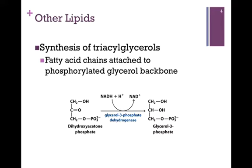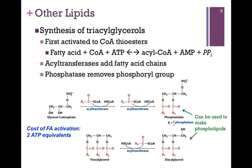Let's first consider the synthesis of triacylglycerols. We're going to attach fatty acid chains to a glycerol backbone, but we actually start with a phosphorylated backbone. The enzyme glycerol-3-phosphate dehydrogenase reduces dihydroxyacetone phosphate to glycerol-3-phosphate, and this will give us the backbone on which we'll build. Before we can attach those fatty acid chains, they need first to be activated and transferred to coenzyme A in a process identical to that which we saw in beta-oxidation.